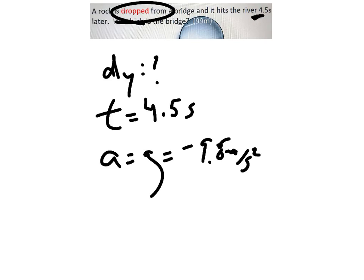Dropped is telling you that you did not throw it up or down, so your initial velocity is not unknown—it's zero meters per second.